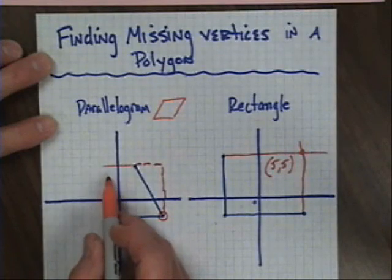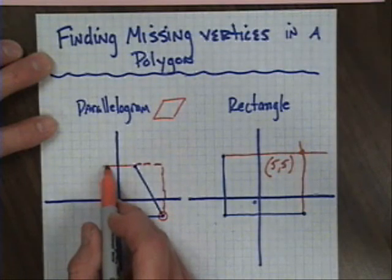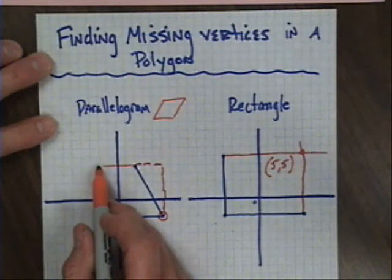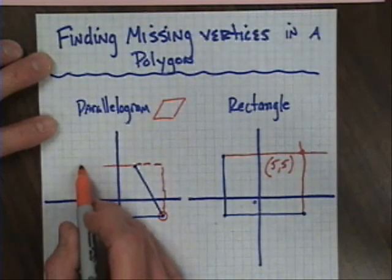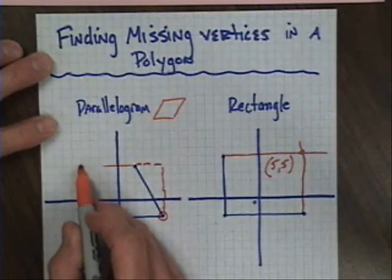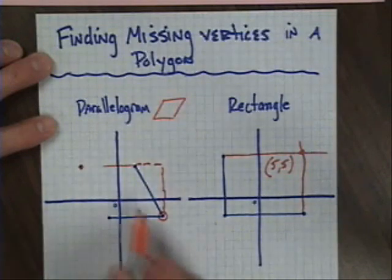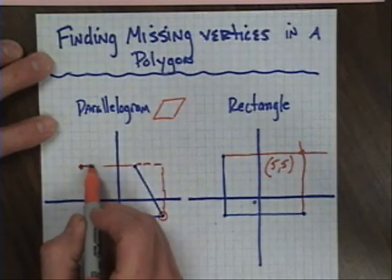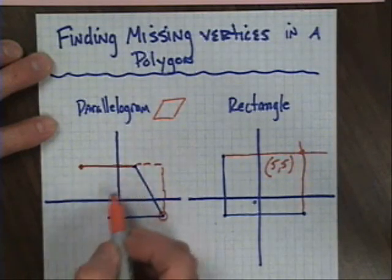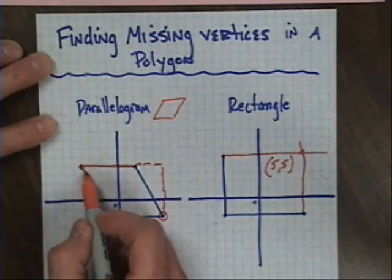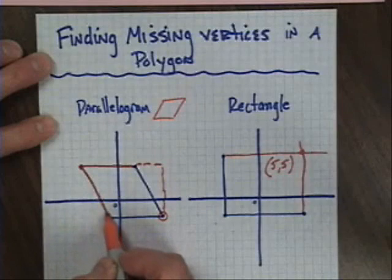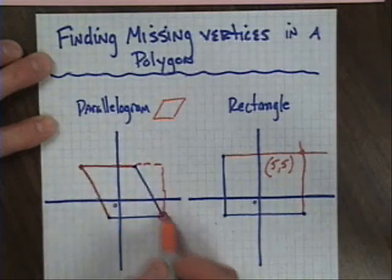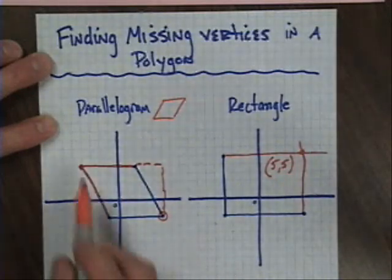I'm going to do the same thing over here, but without drawing it out so much — up six, then left three. That should be my missing corner. Let me go ahead and draw that in as best I can, and I should have myself a nice parallelogram.